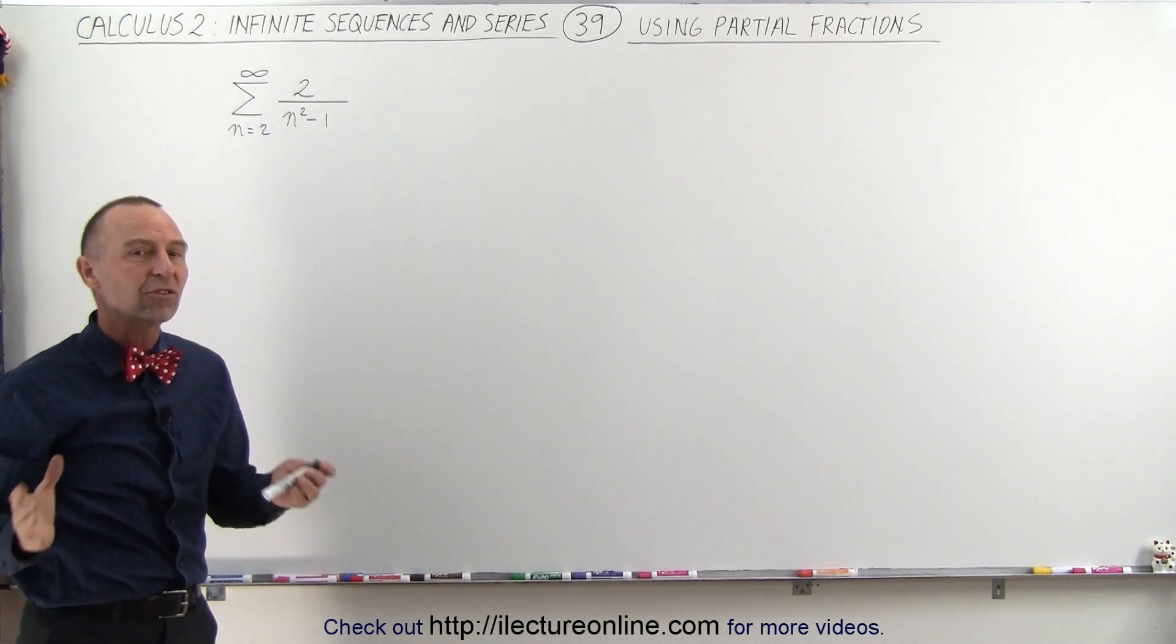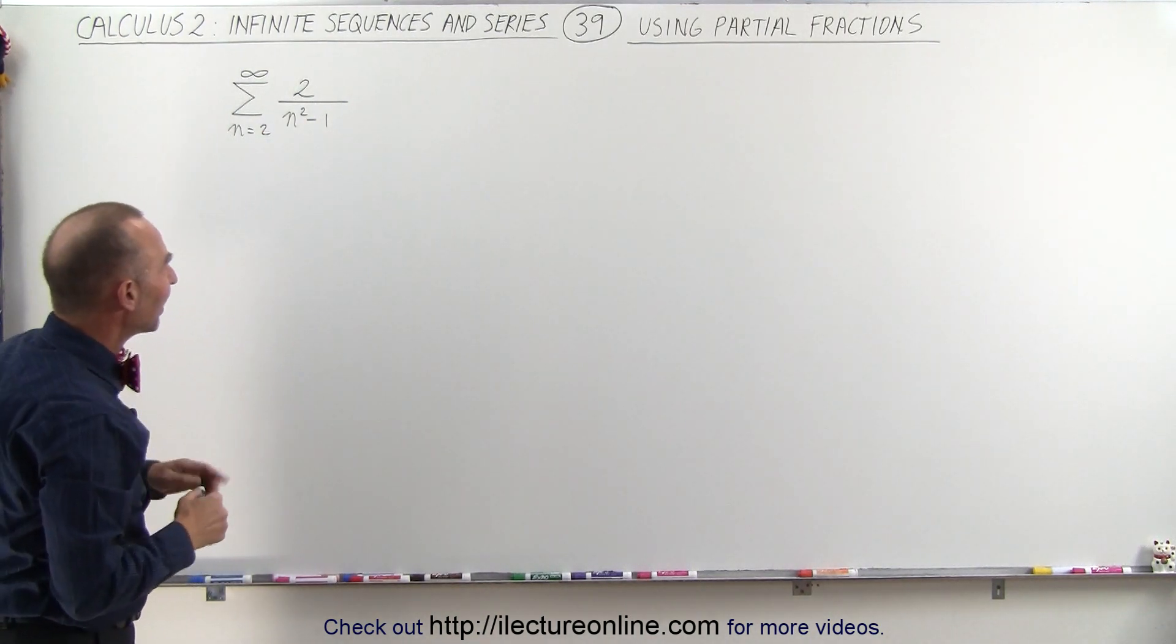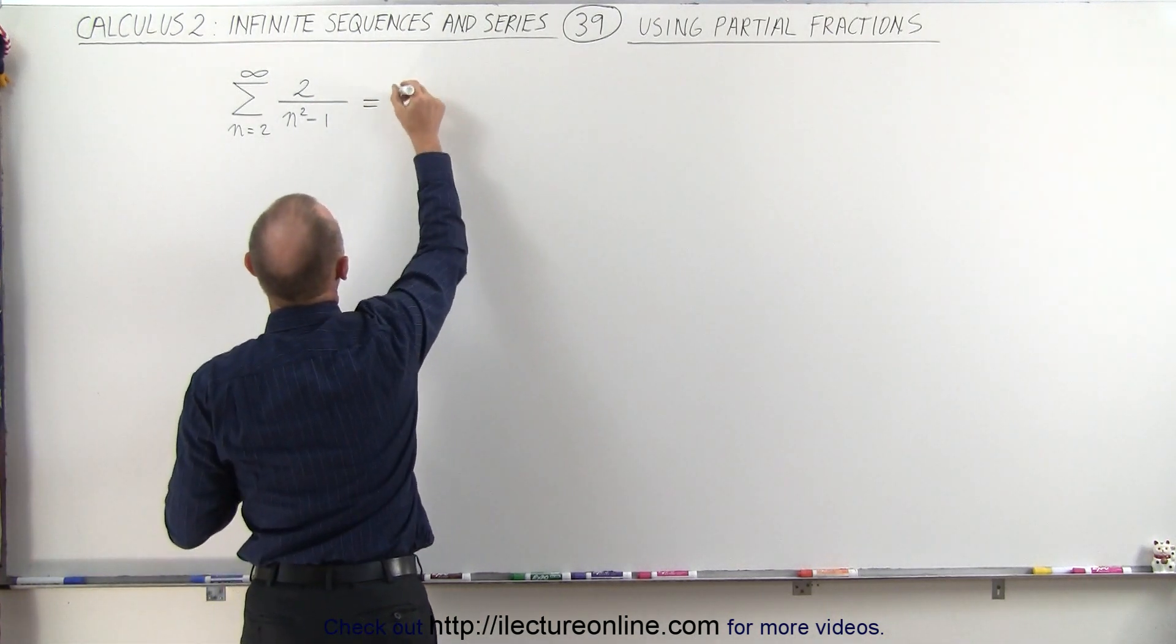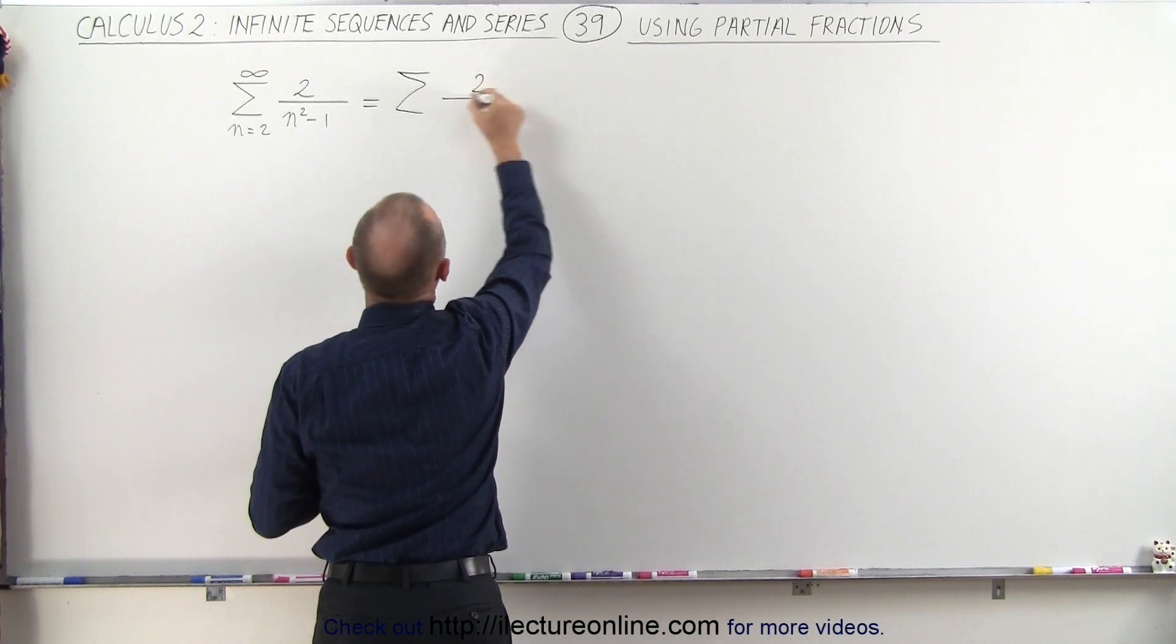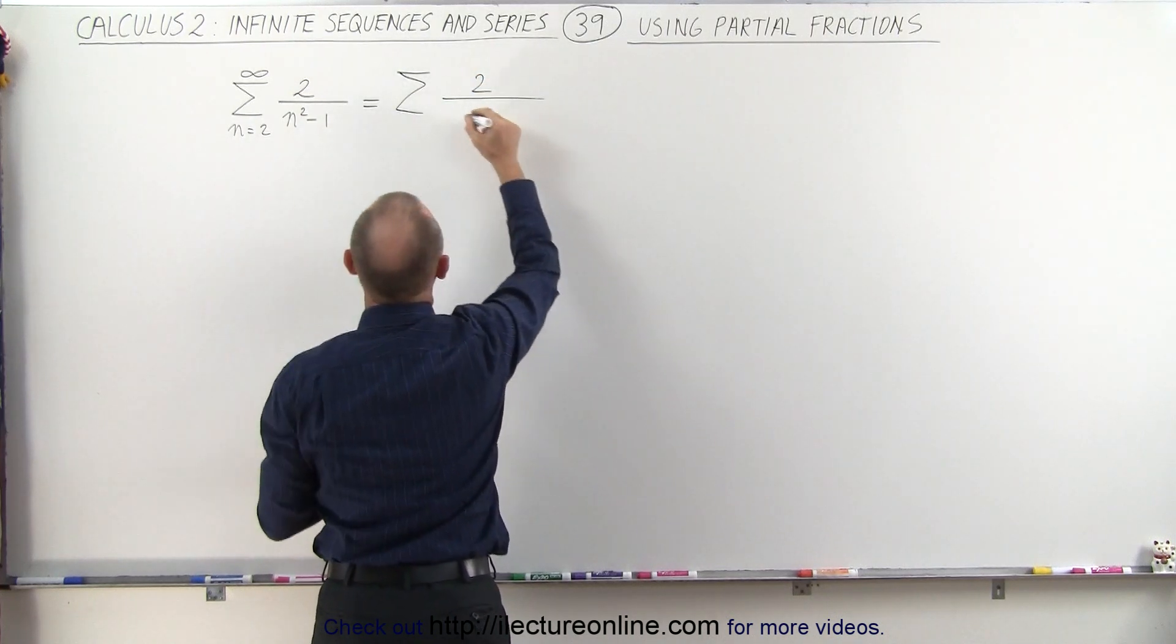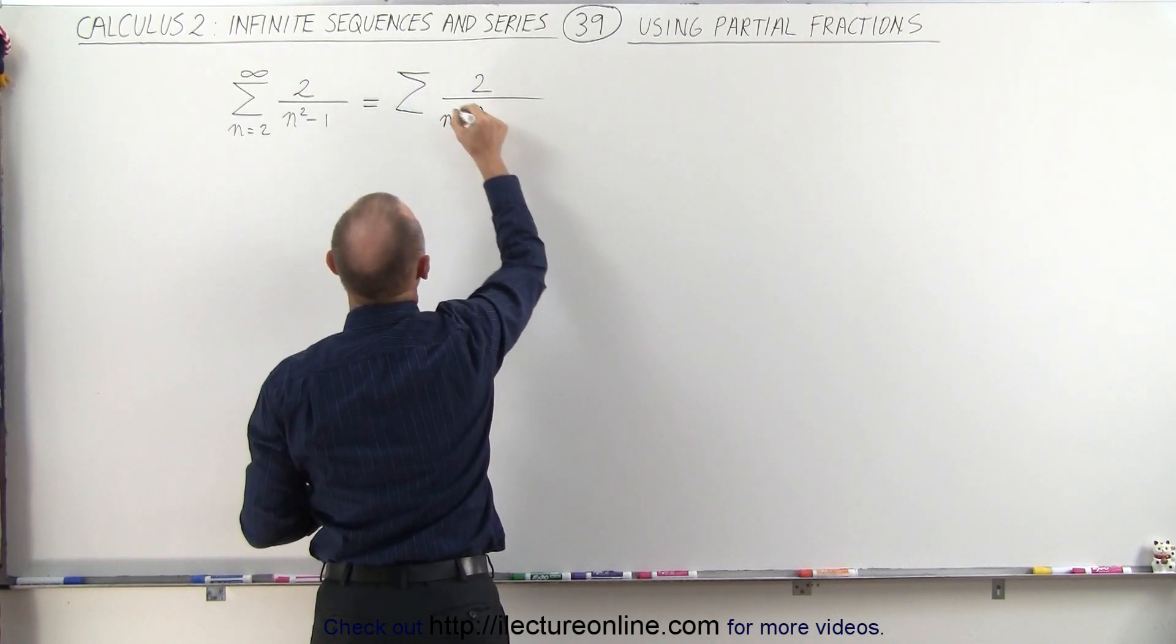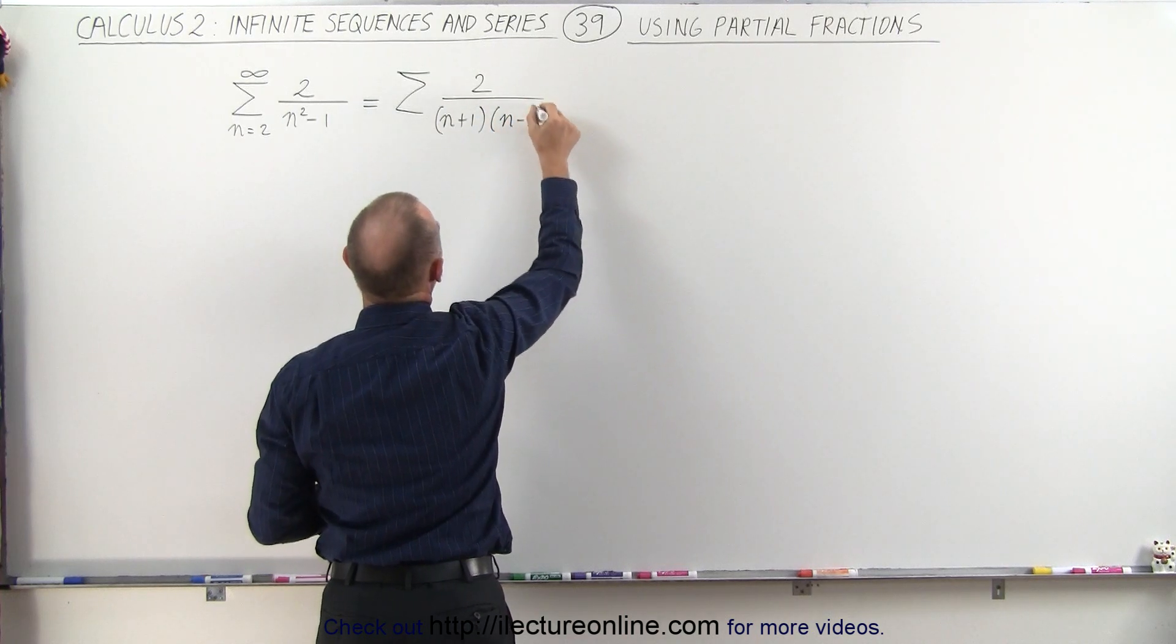Now, what will be the sum? Well, we can find out what the sum will be by writing the following thing. This can be equal to the infinite sum of 2 divided by, and if we factor the denominator, we get n plus 1 times n minus 1.